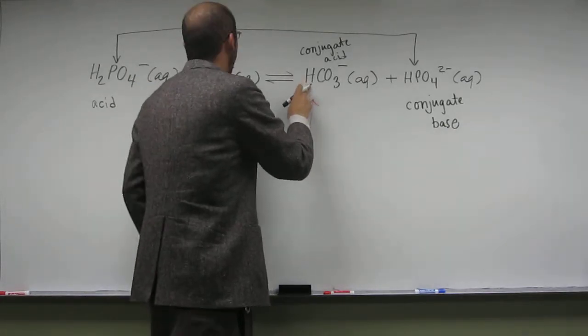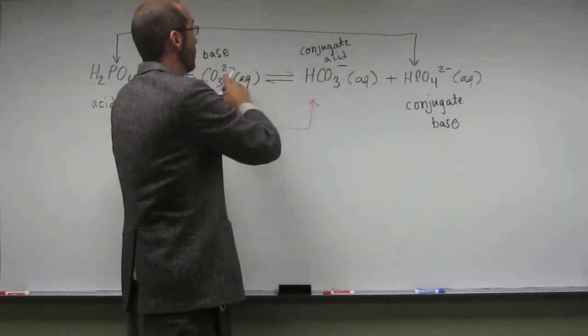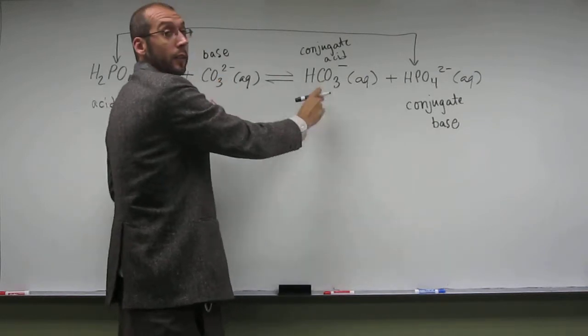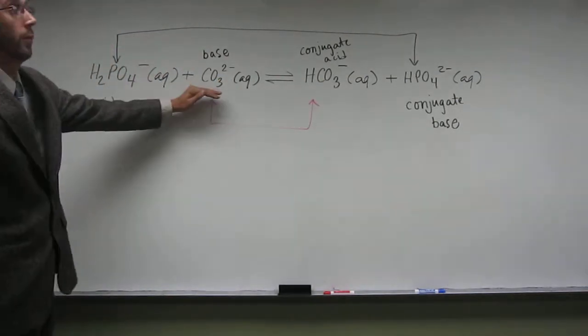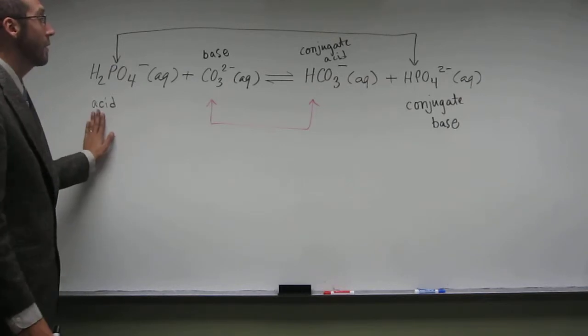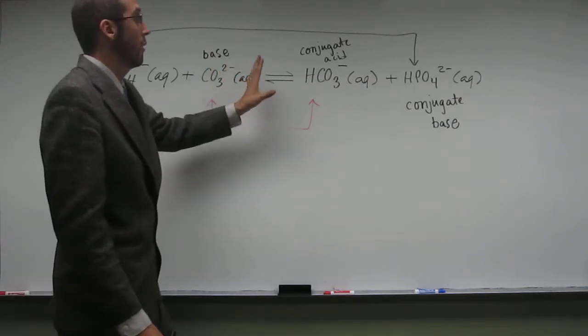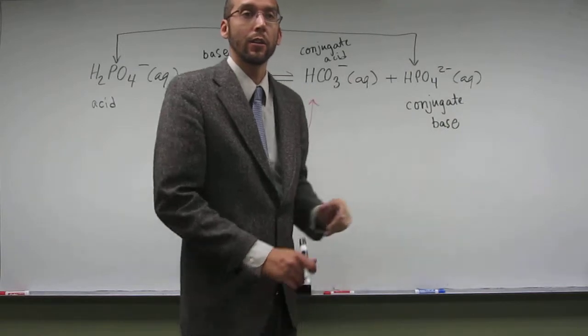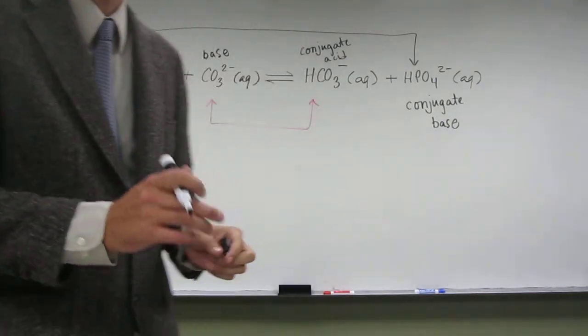We've lost an H and a plus, right? So that definitely is the conjugate acid of this base. So acid reacts with base on the reactant side, producing their conjugate acid and conjugate base on the product side. Does that make sense?